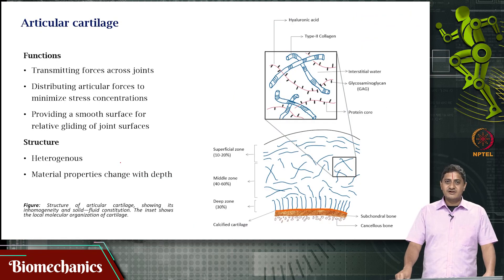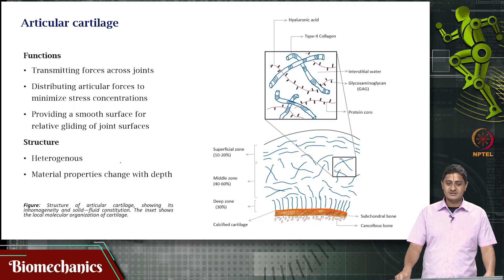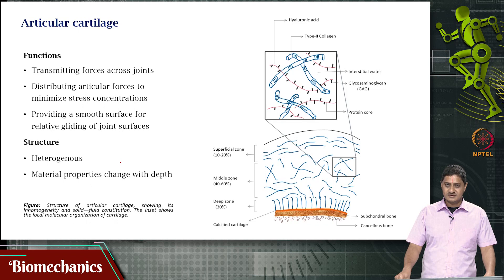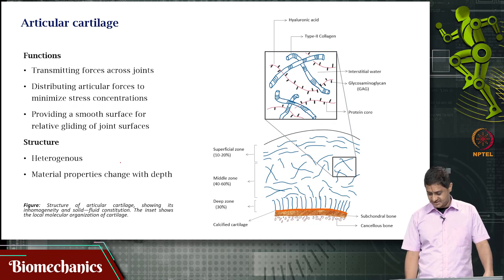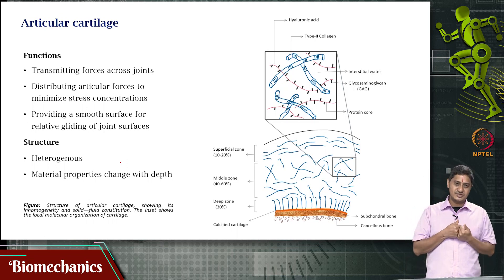Then we have articular cartilage, which has the crucial function of transmitting forces across joints. It distributes articular forces and minimizes the concentration of stress — a crucial function, because if stress is concentrated, it might lead to failure of the biological material. It also provides a smooth surface for relative gliding of joint surfaces.